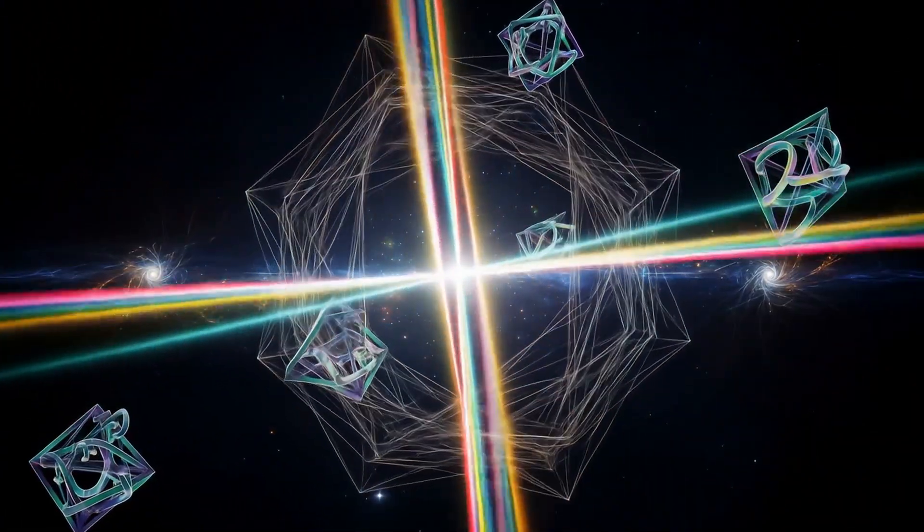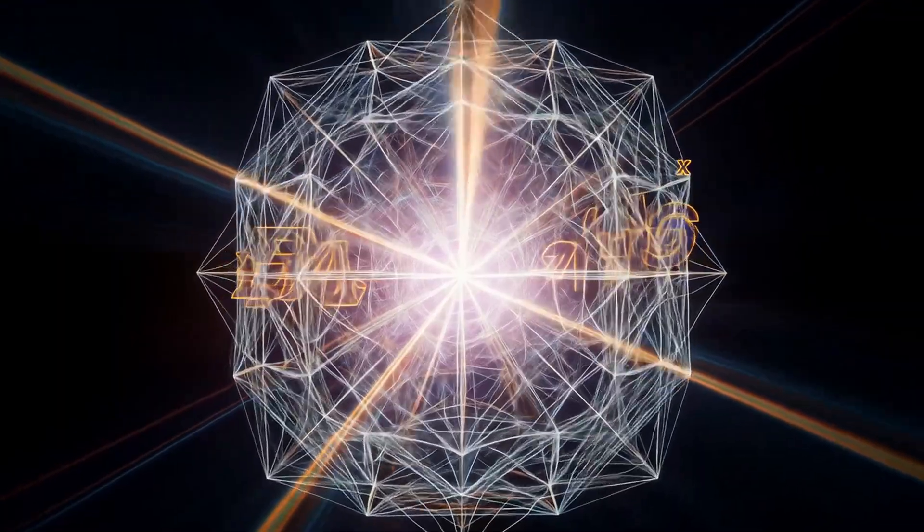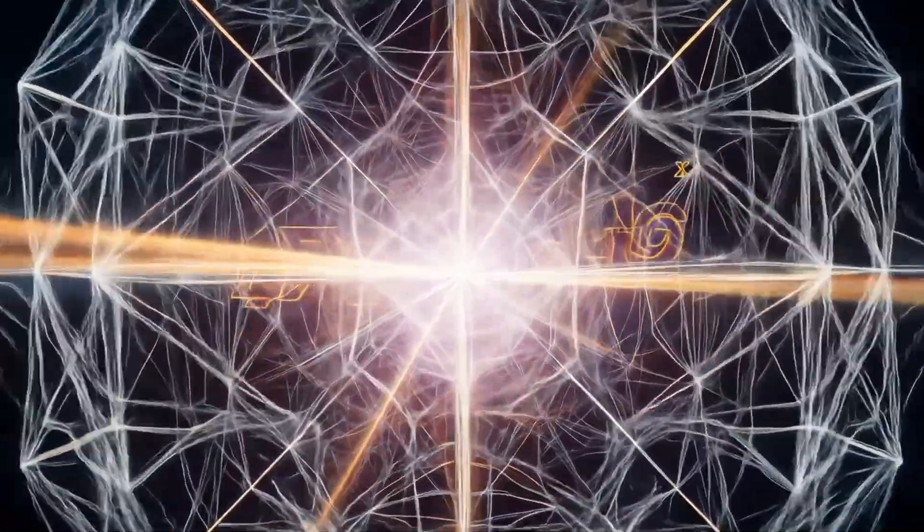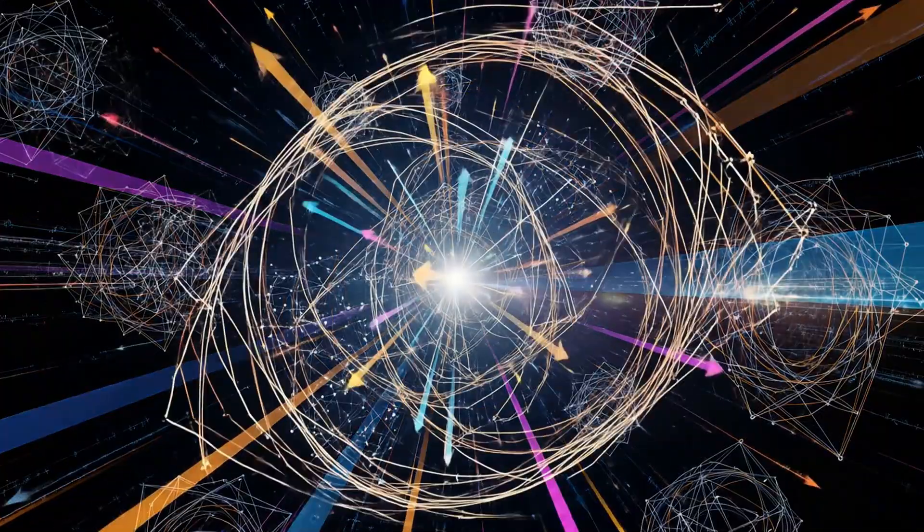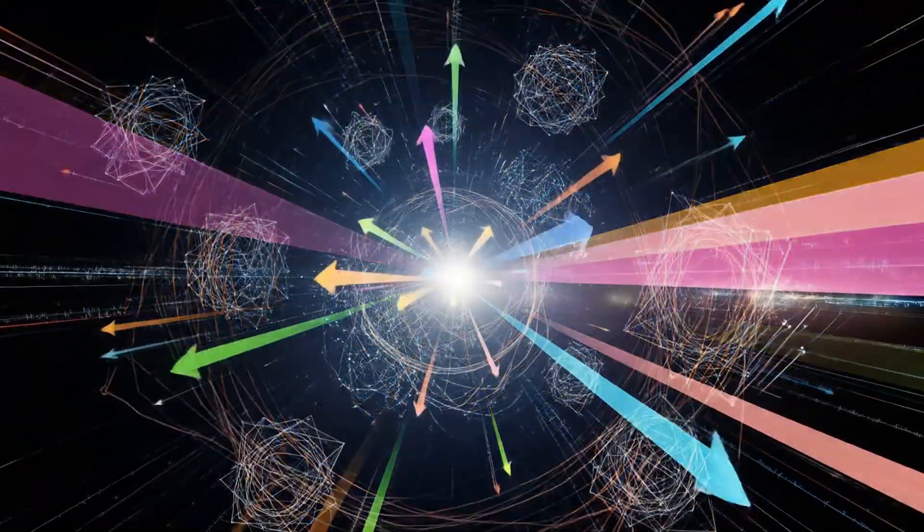From within me, light rotated, not randomly, but with precise angular orientation. Every rotation was a quantum state vector, encoding, remembering, projecting. Each vector spun at a certain angle relative to the observer's axis, and that angle became the curvature of time.